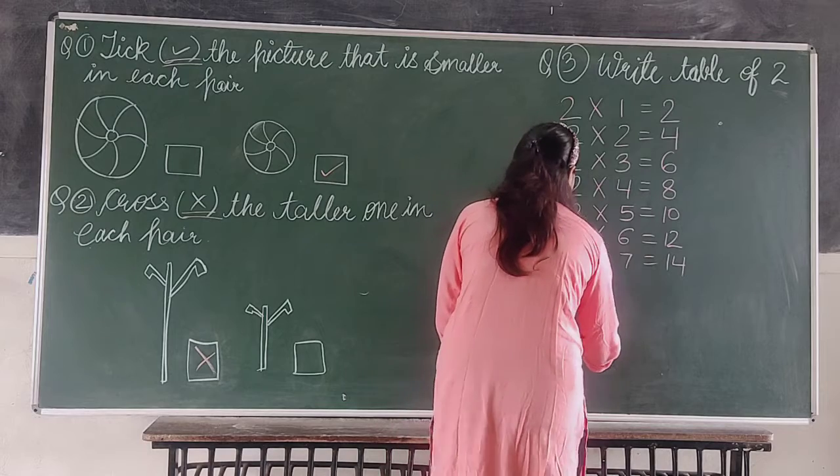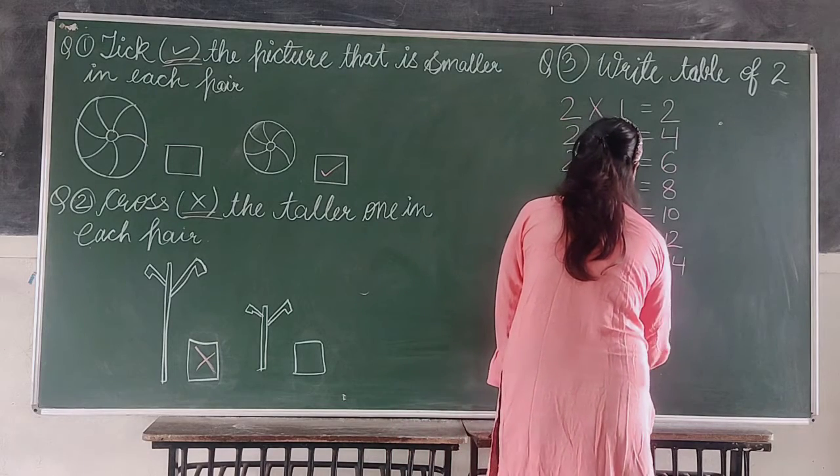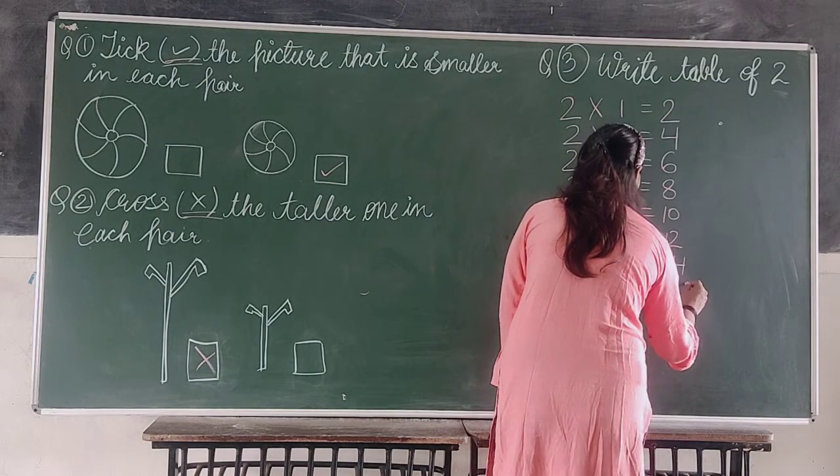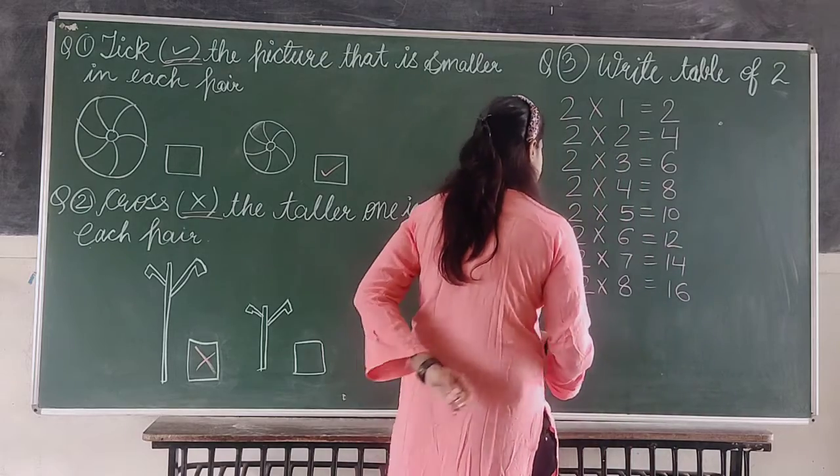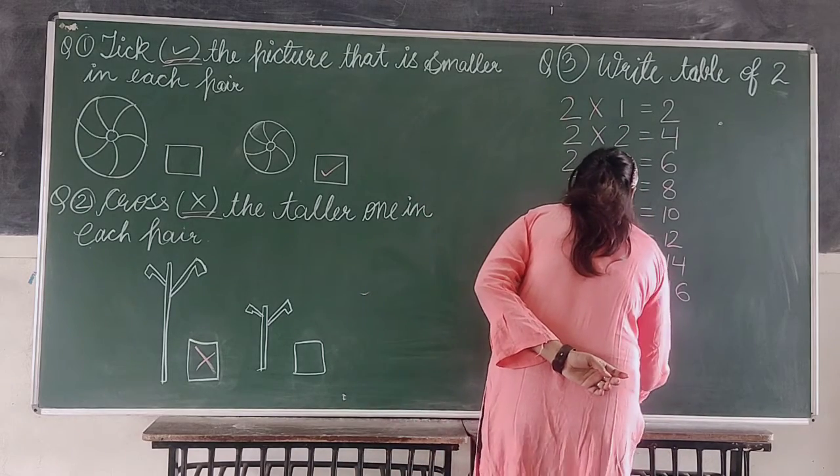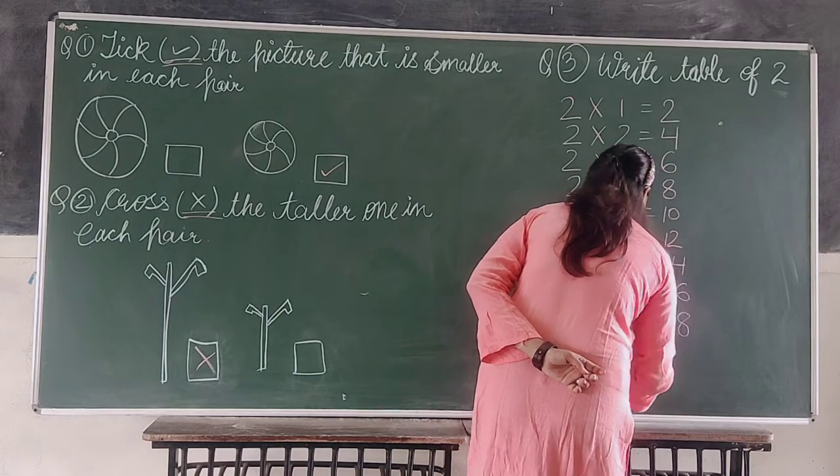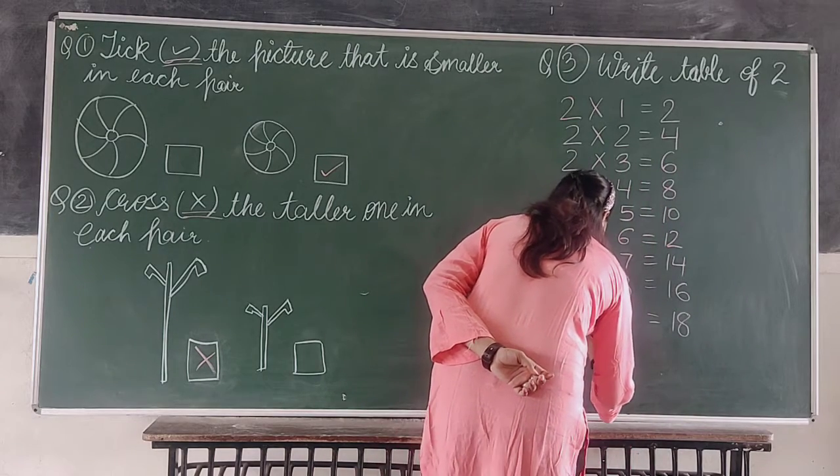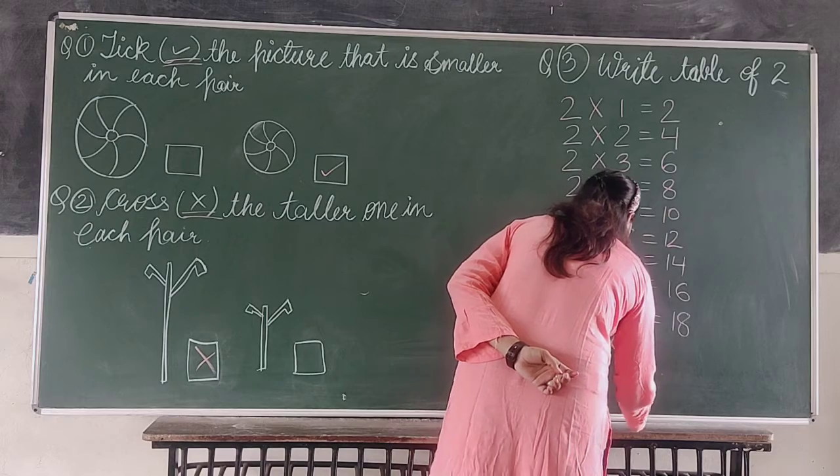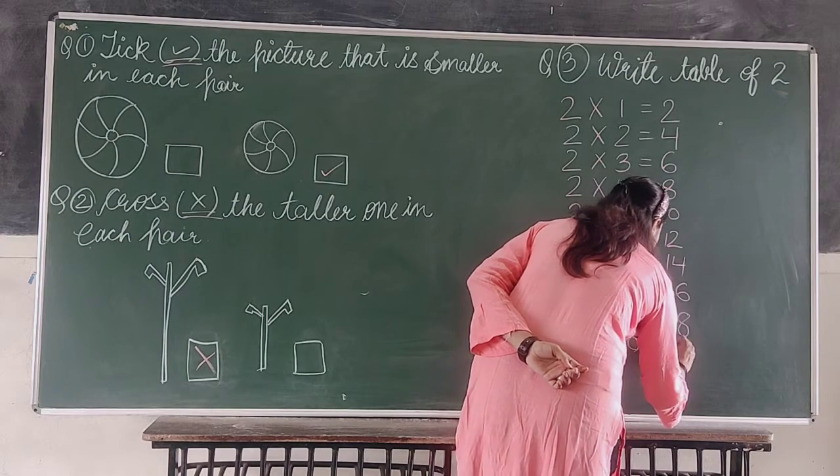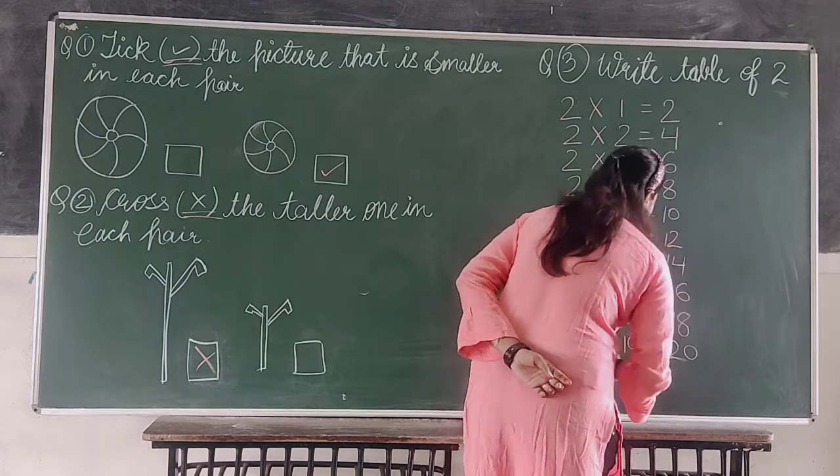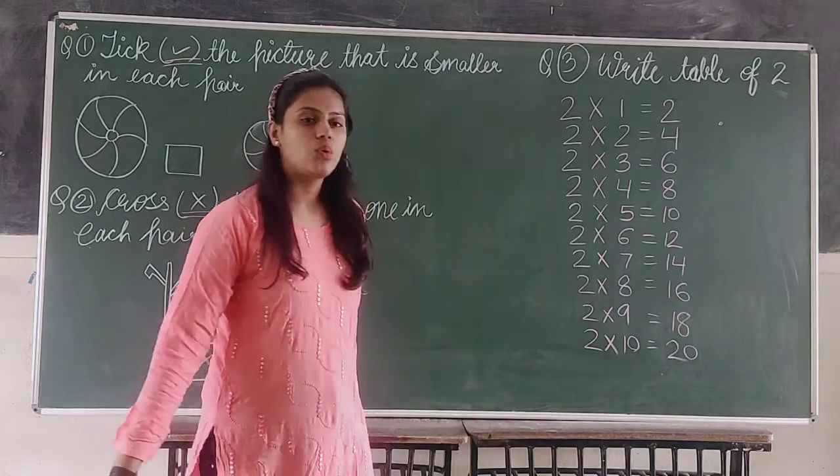Two into seven equals to fourteen. Two sevens are fourteen. Two into eight equals to sixteen. Two eights are sixteen. Two into nine equals to eighteen. Two nines are eighteen. Two into ten equals to twenty. So two tens are twenty.